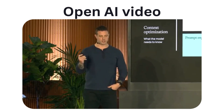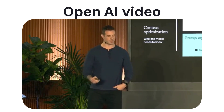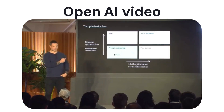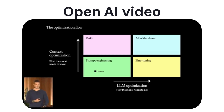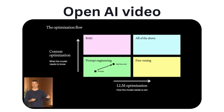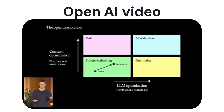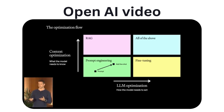A typical optimization journey often looks like this: you start in the bottom left corner with a prompt, create an evaluation, and figure out your baseline. Then the simple next step is to add few-shot examples — give the model a couple of input-output pairs showing how you want it to act. If those few-shot examples increase performance quite a bit, you can hook that up to some kind of knowledge base to industrialize that process.